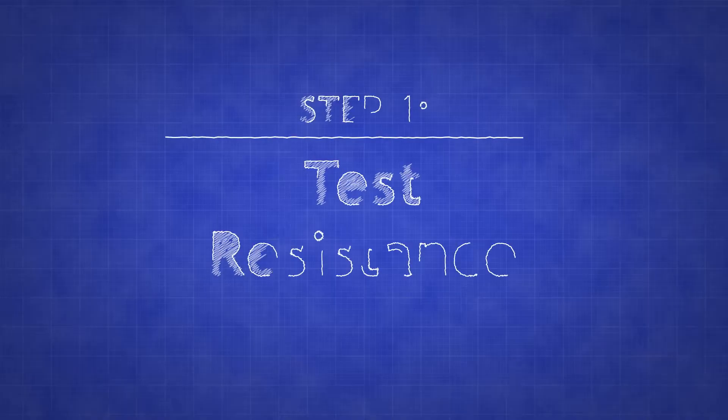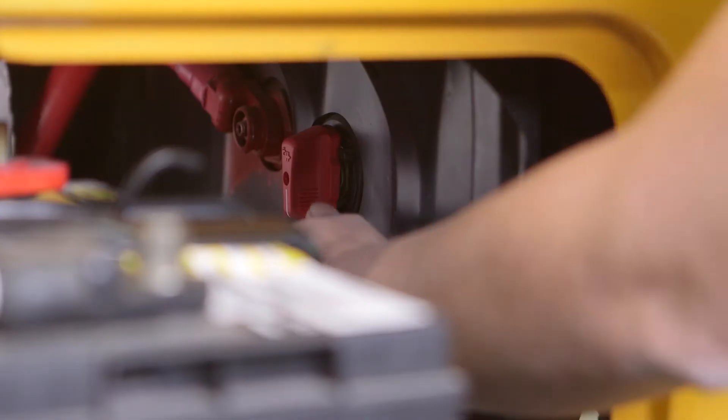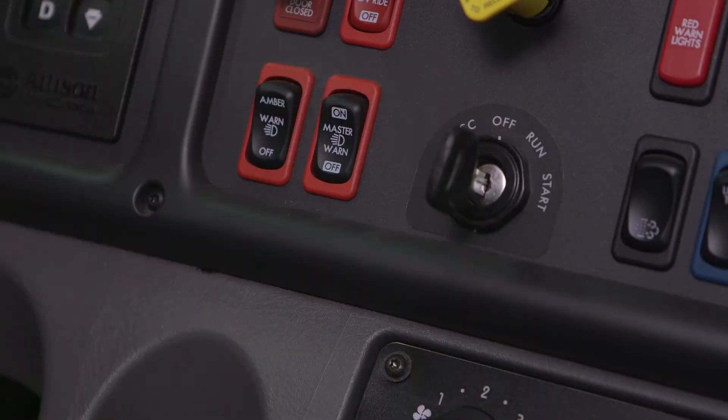First, we must check the electrical resistance of the Datalink. To obtain an accurate reading, the batteries must be disconnected and the ignition turned off prior to measuring any electrical resistance.